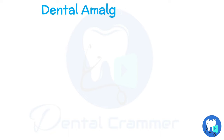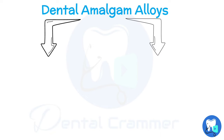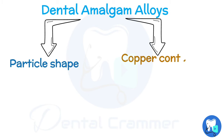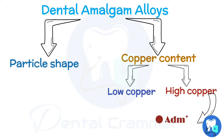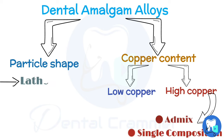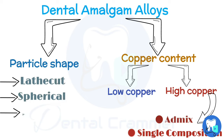Dental amalgam alloys can be classified according to particle shape and copper content. On the basis of copper content, there can be low copper alloys or high copper alloys. High copper alloys are further divided into admix or single composition alloys. According to particle shape, alloys can be lathe cut, spherical, or admix.